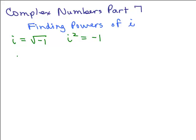For instance, i to the 1st is obviously just i. And i squared, we know, is just negative 1.